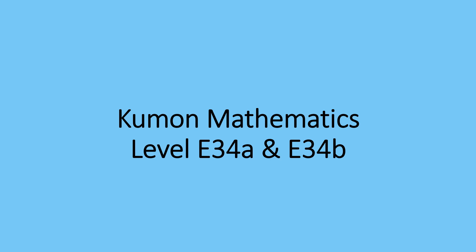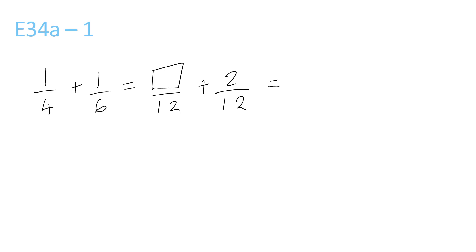We'll be doing level E34A and E34B. This first question: 4 and 6 — what's the lowest number they both go into? It's 12. 4 times 3 is 12, and 6 times 2 is 12.